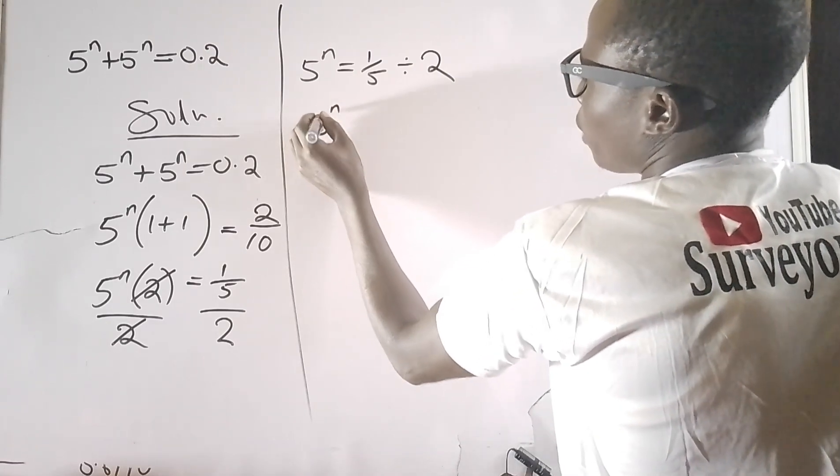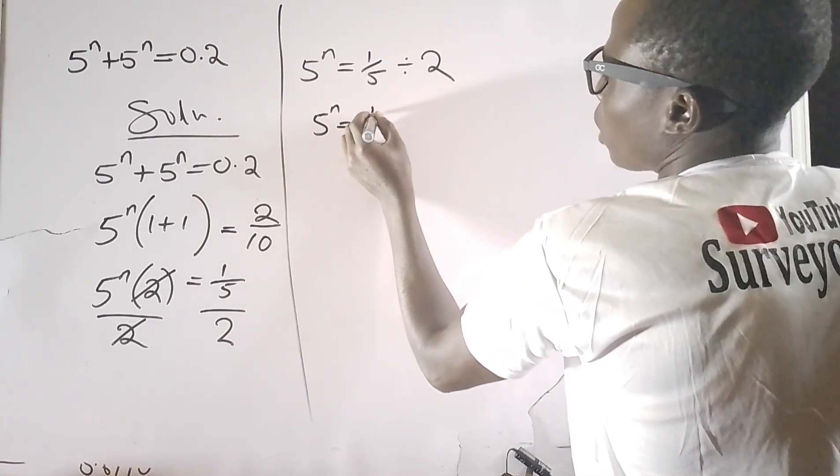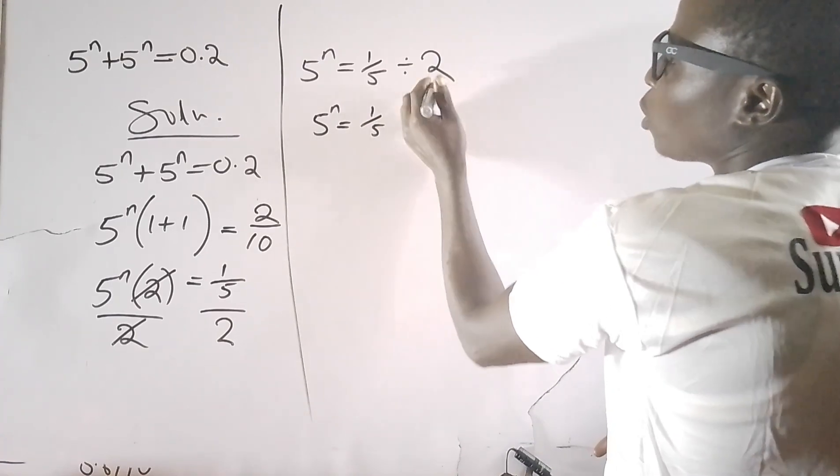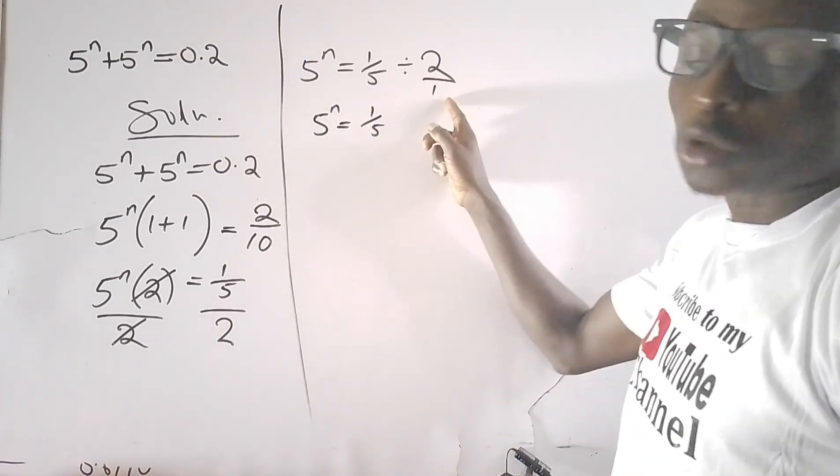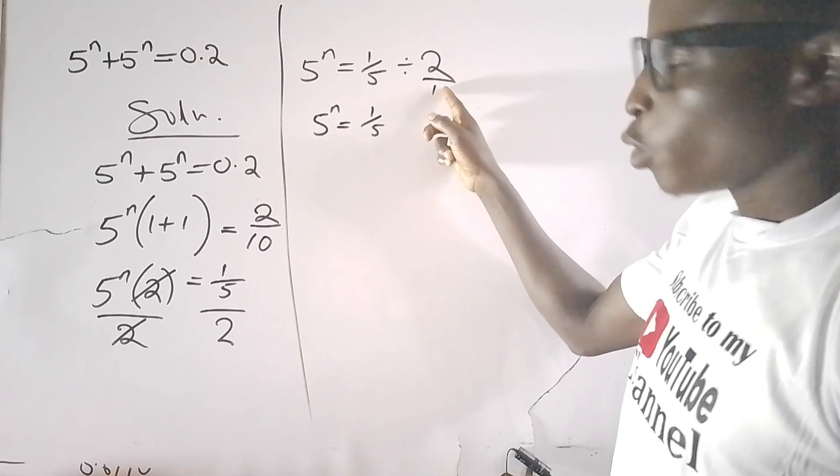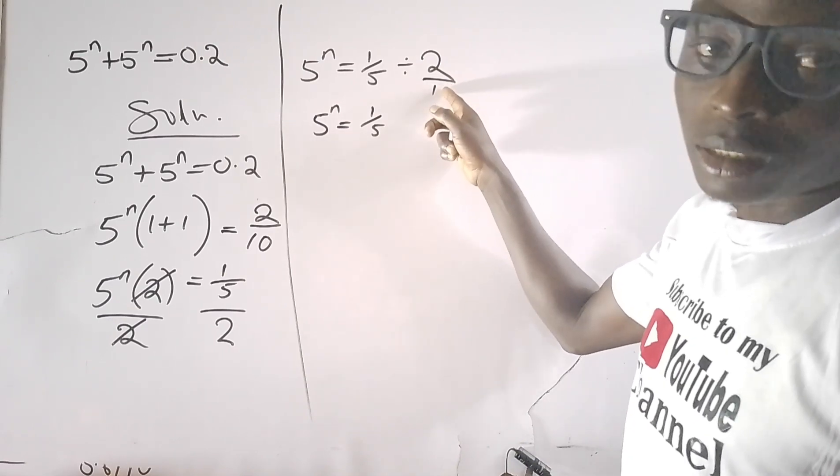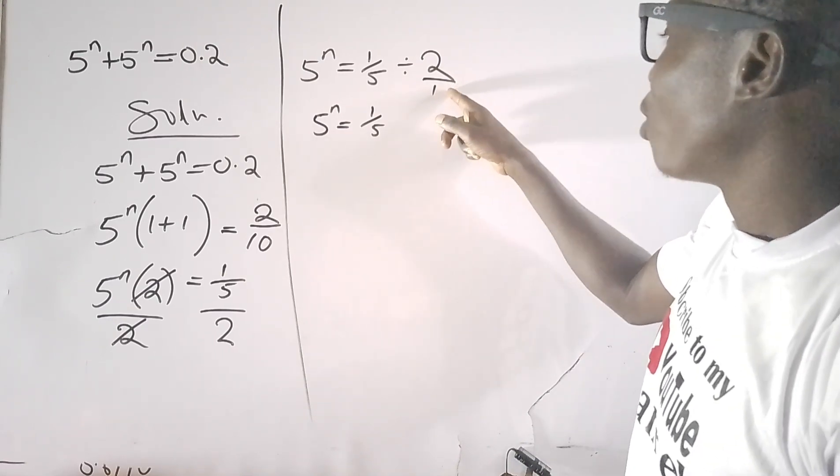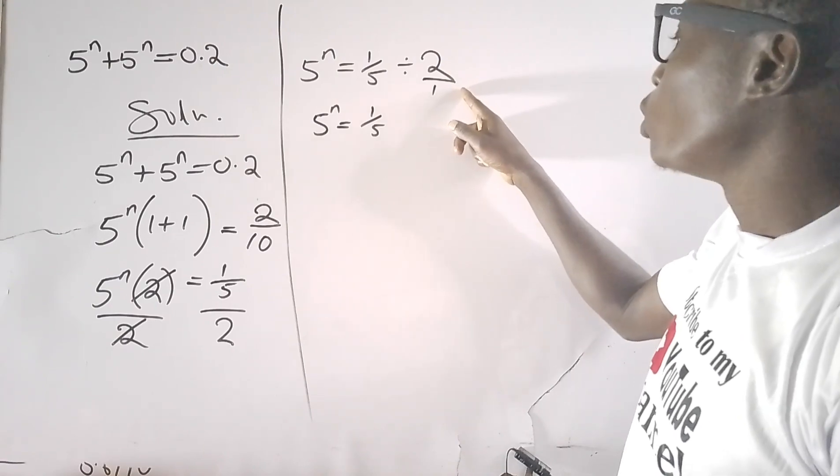5^n is now equals to 1 over 5. When I change, because here the position of these is over 1—I assume that there is a virtual 1 in the position of the numerator.